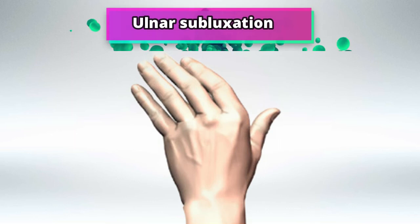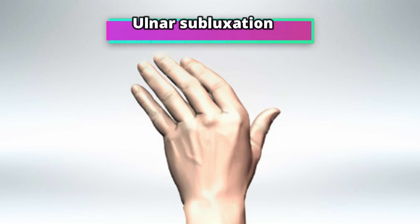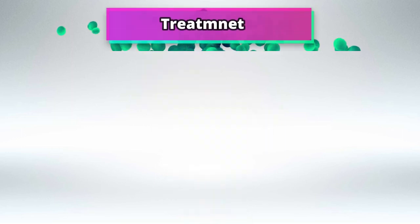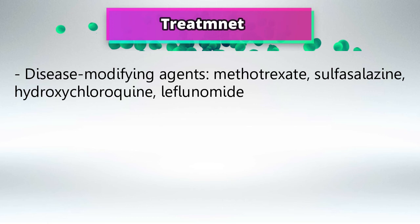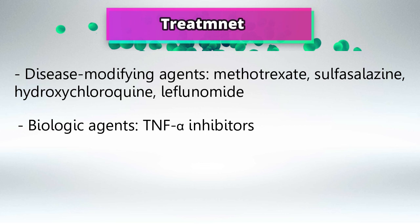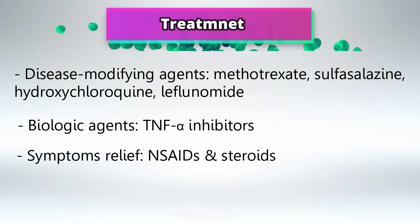And finally, ulnar subluxation of the fingers. To treat rheumatoid arthritis, we use disease-modifying agents such as methotrexate, sulfasalazine, hydroxychloroquine, and leflunomide. We also use biological agents like tumor necrosis factor alpha inhibitors, which inhibit granuloma formation. For symptom relief, we give NSAIDs and steroids.